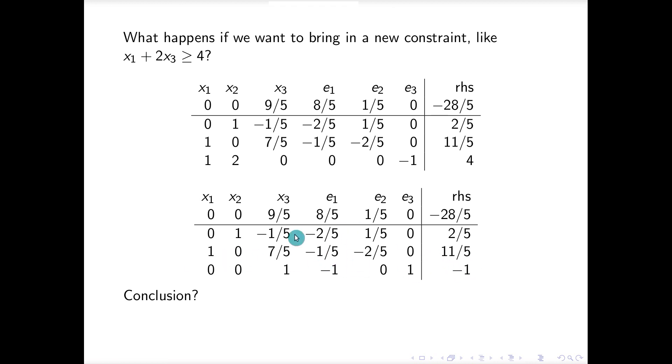Another way to look at this is to say if I have this constraint, is it satisfied if I use this old solution? If x1 is equal to 11 fifths and x2 is equal to two fifths, let's see. What is 11 fifths plus eight fifths? 19 fifths. Is 19 fifths greater than or equal to four? No. So therefore that's why this constraint is not satisfied with our current solution.